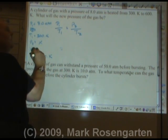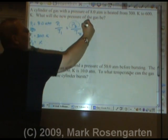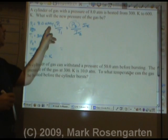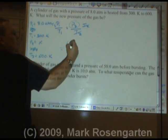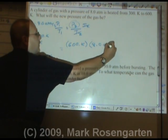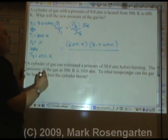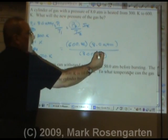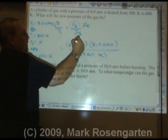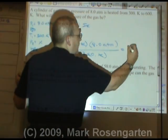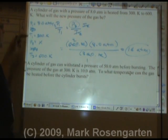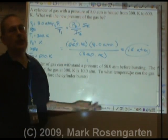We're trying to solve for P2, which is in the numerator. So multiply both sides by T2 to get it out of there. The units for temperature will cancel and leave you with the units for pressure. T2 is 600 kelvin, P1 is 8.0 atmospheres over T1, which is 300 kelvin. Kelvin cancels, leaving us with atmospheres. So 600 and 300 simplifies to 2 over 1. 2 times 8 is 16 atmospheres, to 2 sig figs because 8.0 is 2 sig figs. If you double the temperature, you'll double the pressure because it's a direct relationship.